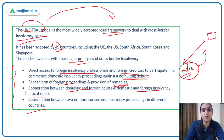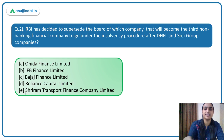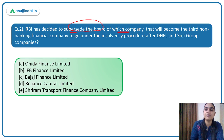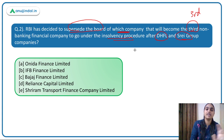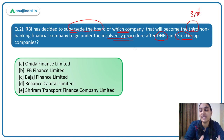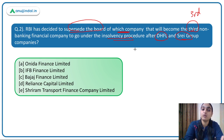Moving to the second question: RBI has decided to supersede the board of which company, making it the third NBFC to go under insolvency procedure after DHFL and SREI Group? RBI had previously taken over the boards of DHFL and SREI Group, and now it has superseded the board of another NBFC.